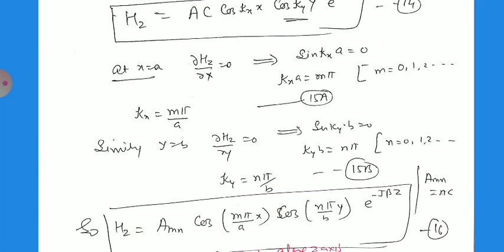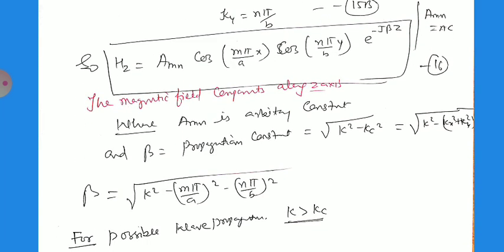We have obtained the propagation constants. The final solution is: Hz equals Amn·cos(mπx/a)·cos(nπy/b)·e^(−jβz), where Amn equals A·C and depends on the mode indices m and n. This is the magnetic field component along the z-axis for TE mode. The phase constant is: beta equals root of (k² minus kc²) equals root of (k² minus (mπ/a)² minus (nπ/b)²).